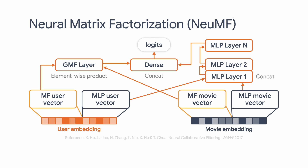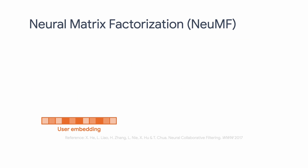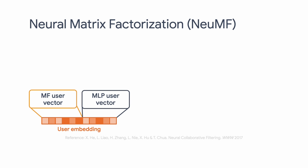NeuMF is a fused model of GMF and MLP to better model the complex user-item interactions, and unifies the strengths of the linearity of MF and the nonlinearity of MLP for modeling the user-item latent structures. NeuMF allows GMF and MLP to learn separate embeddings and combines the two models by concatenating their last hidden layers. Specifically, starting at the bottom, we have user and movie embeddings.